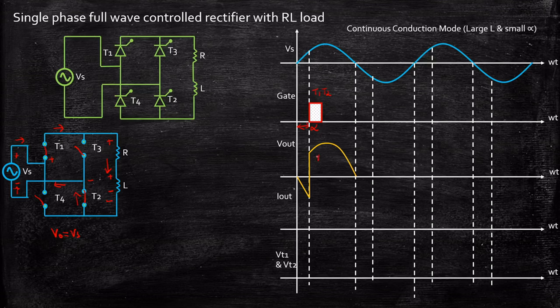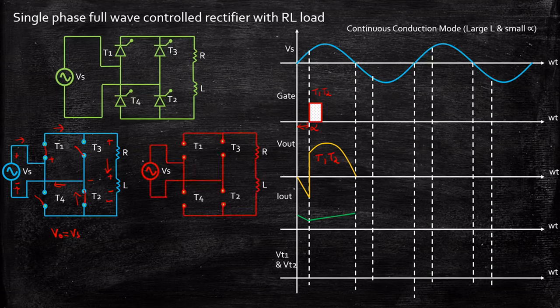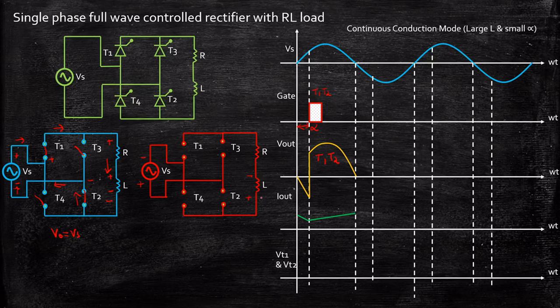What happens to the current? The inductor starts slowly charging, so the current slowly starts to increase and reaches a peak value. Now when the negative half cycle appears — that is when the supply voltage goes negative and becomes minus and plus — we would have thought T1 and T2 should be reverse biased. But that is not the case. According to Lenz's law, the inductor will reverse its polarity to minus and plus and will ensure that the current still flows in the same direction.